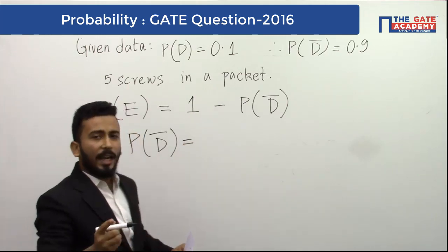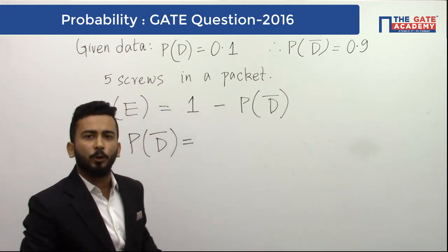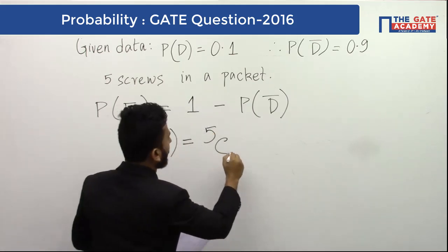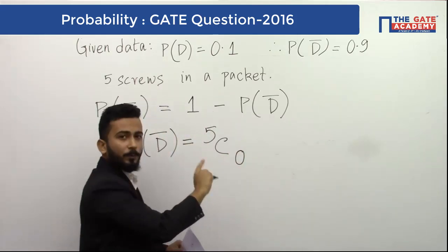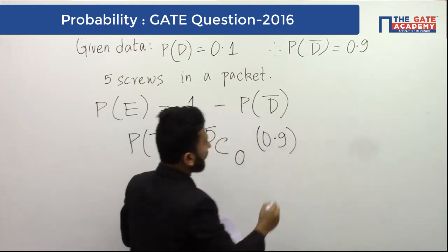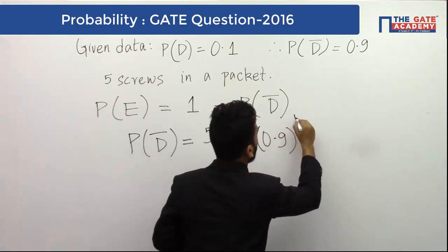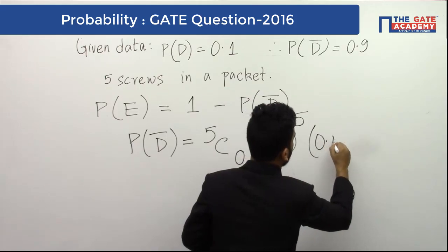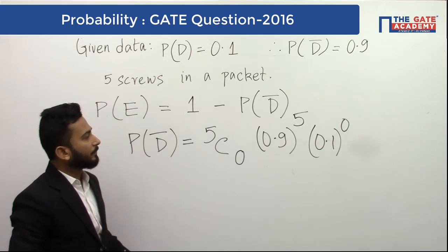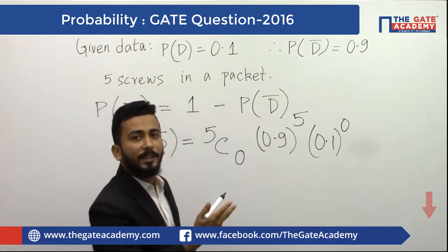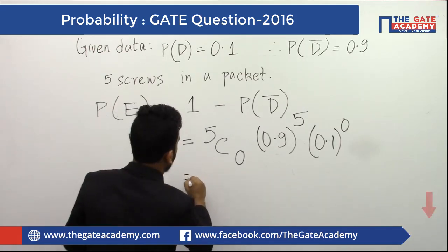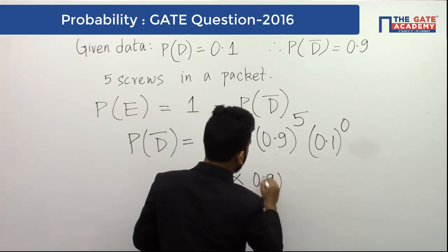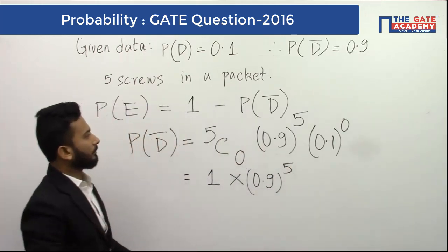That will be, here I will be using the concept from binomial distribution, the formula which says 5C0, I am finding that none of the screws are defective, so 0. Probability of non-defective to the power 5, because I am finding the probability of non-defective screws. And defective 0. This is a concept taken from binomial theorem or binomial distribution used in probability. So when we take out the value or find out the value, it will come as 1.